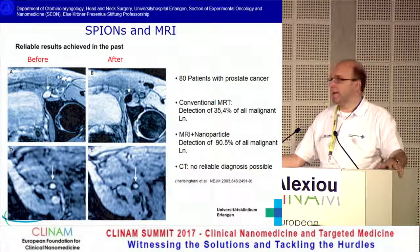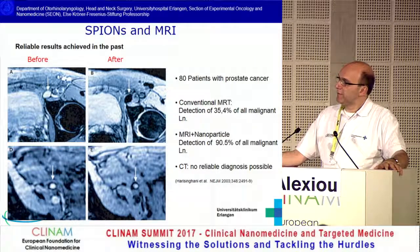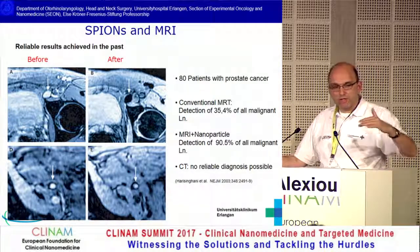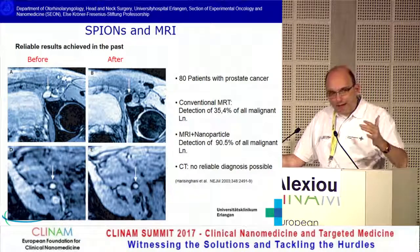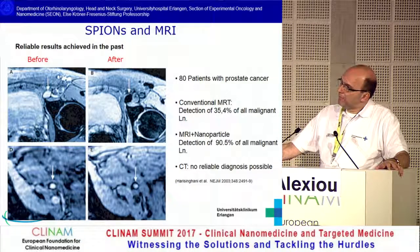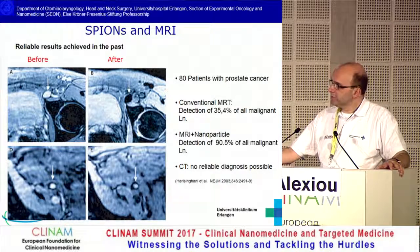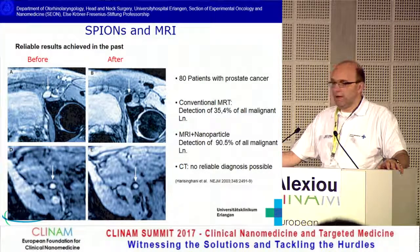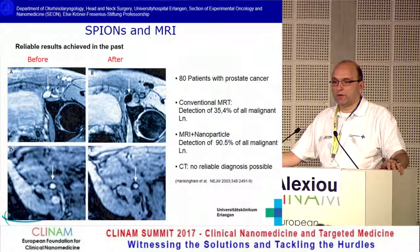If you can detect before the operation the lymph nodes which are really affected, it's much more beneficial for the patient. A homogeneous signal loss in a lymph node is a strong sign for a benign lymph node. An inhomogeneous contrast — before and after application — indicates a high potential for a malignant lymph node. So this is really important: non-invasive detection of potentially malignant lymph nodes before operation.